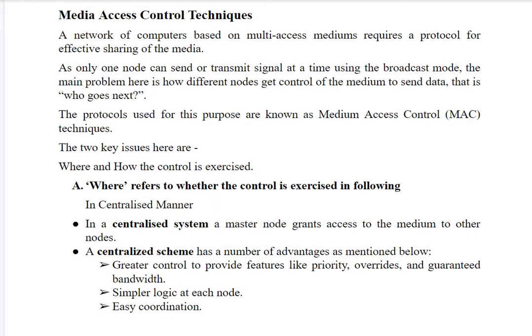Media Access Control Techniques define a method through which every computer on the network gets to know when the channel will be free or when it will be busy. Consider an example where we have 6 computers connected with each other named 1 through 6. If computer 1 sends data onto the channel and meanwhile computer 3 also starts sending data, the channel was already busy and in that case a collision will occur.